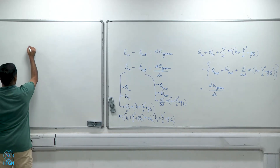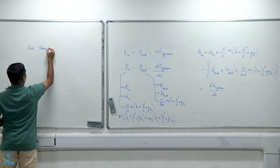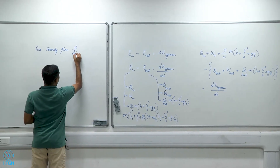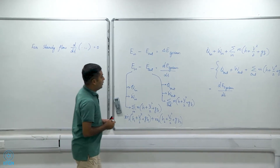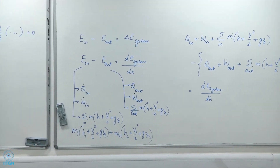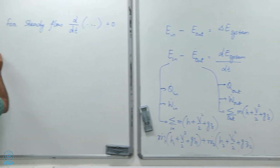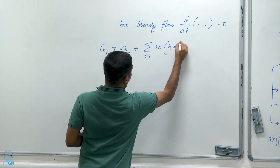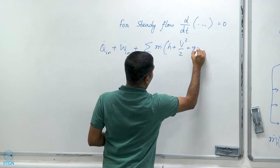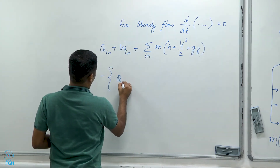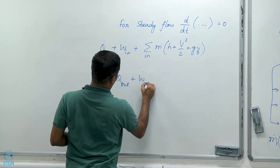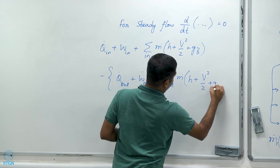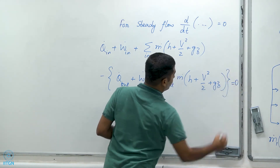For a steady state or steady flow, I can get rid of all the time derivatives, so D/DT of anything is zero. Therefore, I can get rid of the right-hand side, and for a steady flow system I have: Q_dot_in plus W_dot_in plus the summation over all inlets of M_dot times (H + V²/2 + gz), minus Q_dot_out plus W_dot_out plus the summation over all outlets of M_dot times (H + V²/2 + gz), equals zero.